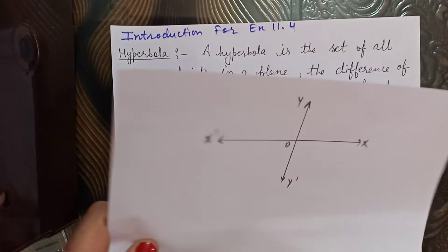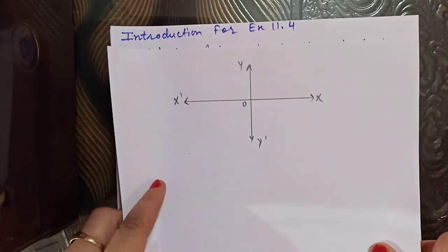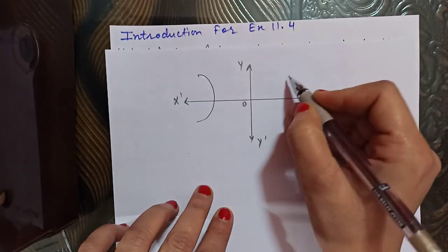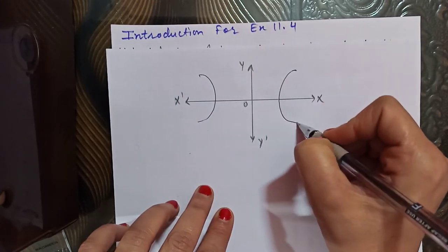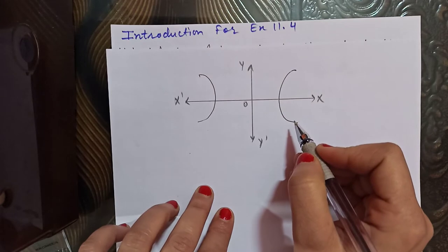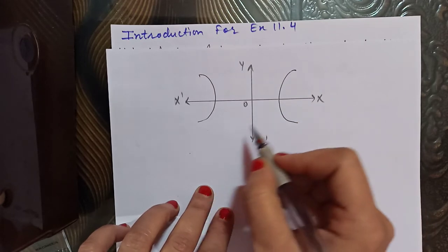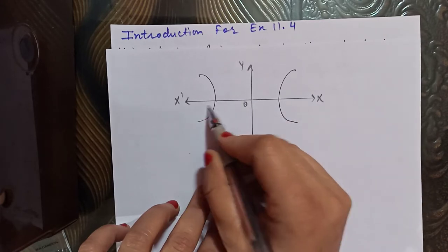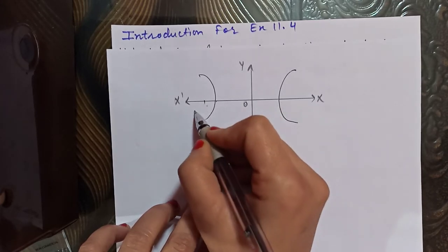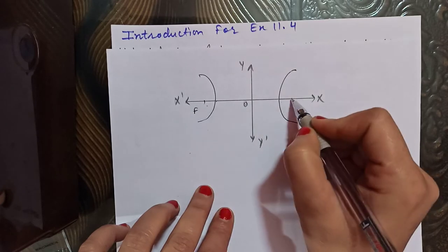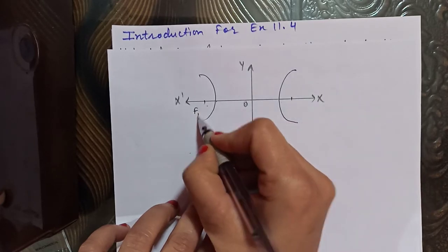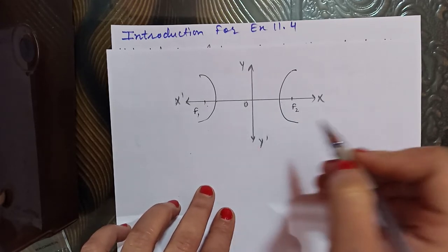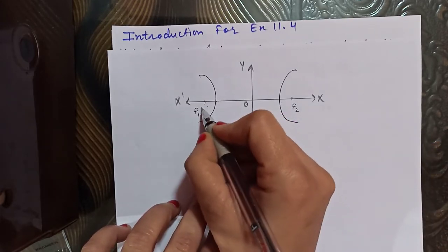As you can see in this diagram, this is the shape of hyperbola. These are the fixed points — the two fixed points. Focus is the singular form and foci is the plural form.